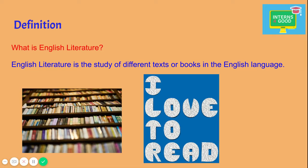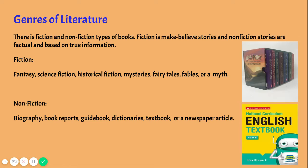So what is English literature? English literature is the study of different texts or books in the English language. Within these different texts and books, there are two main genres of literature: we have fiction and non-fiction. Fiction is make-believe stories, and non-fiction stories are factual and based on true information.